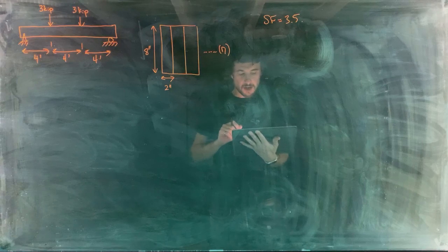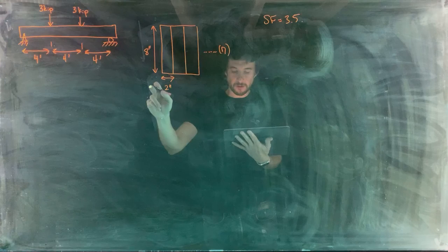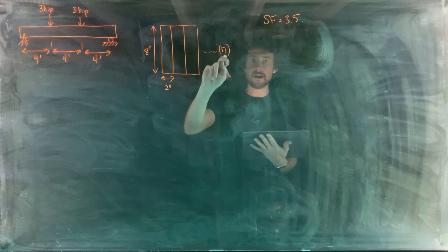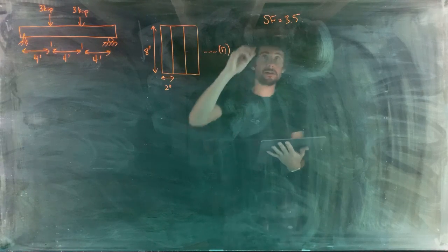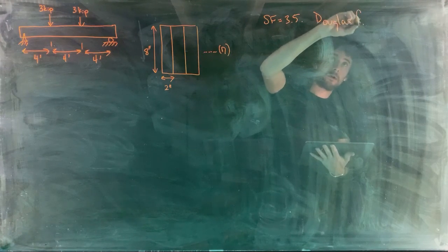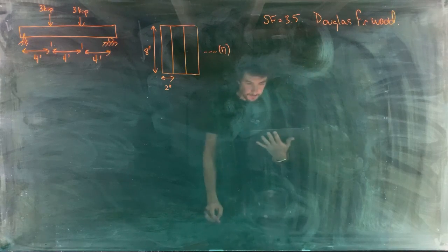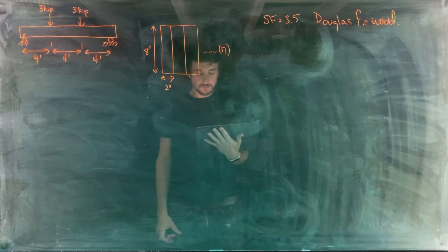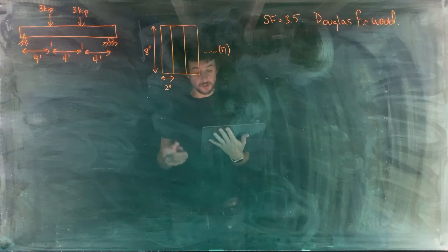Each beam will be made of several 8-inch by 2-inch Douglas fir boards — we have n boards because we don't know how many boards wide the beam is going to be. The grain direction is parallel to the length of each beam, as we would expect.